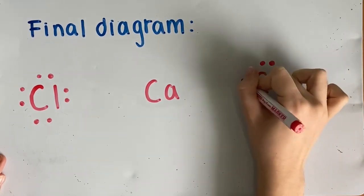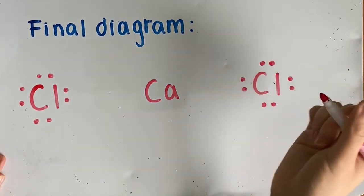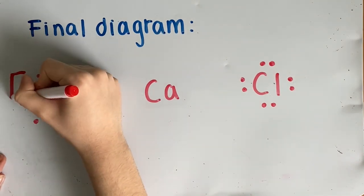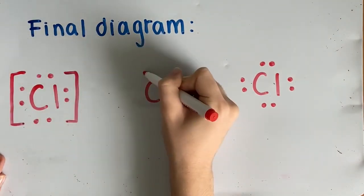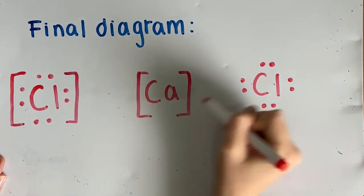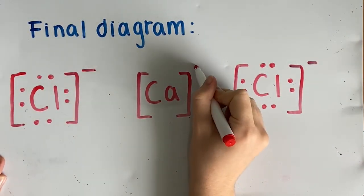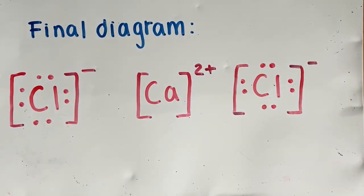Similar charges repel each other, meaning positive charges cannot be next to another positive charge. Similarly, negative charges cannot be put next to another negative charge because they would repel each other. That is why the chlorine ion cannot be next to the other chlorine ion. After we've drawn the electrons, we must write out the charges. This is represented by brackets followed by their charges found at the top right corner. Chlorine, having a charge of one minus, will have a negative sign next to it, and calcium, having a charge of two plus, will have a two plus next to it. That will give you your final Lewis dot diagram.